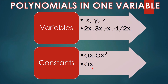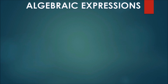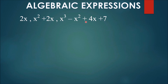There is a difference between letters denoting a constant and a letter denoting a variable. The value of a constant remains the same throughout a particular situation — it does not change in a given problem — but the value of a variable can keep changing. Now, expressions like 2x, x squared plus 2x, x cubed minus x squared plus 4x plus 7 all have whole numbers as the exponent of the variable. Expressions of this form are called polynomials in one variable.